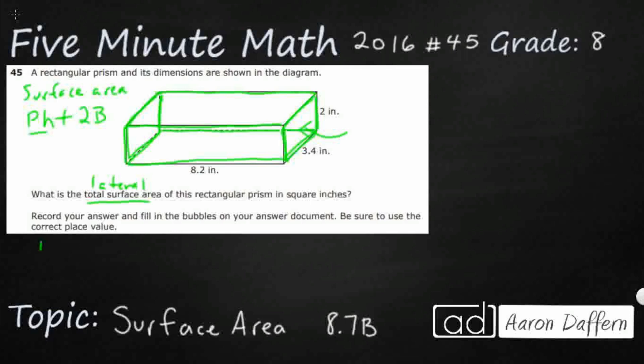The perimeter is double the length plus double the width. You can just add it four times, but that's going to be two times two plus two times 3.4.